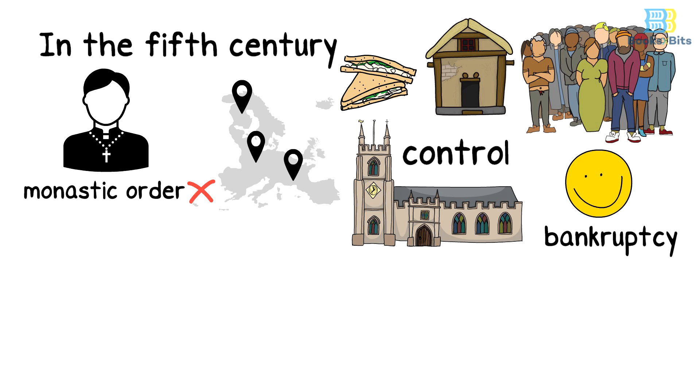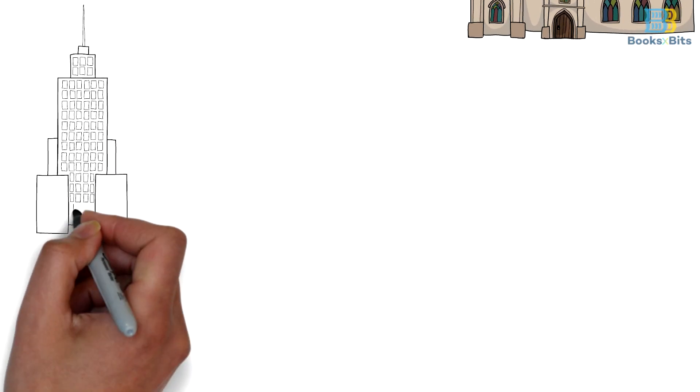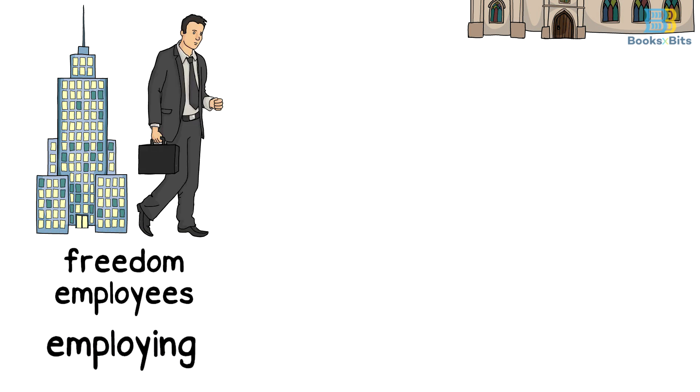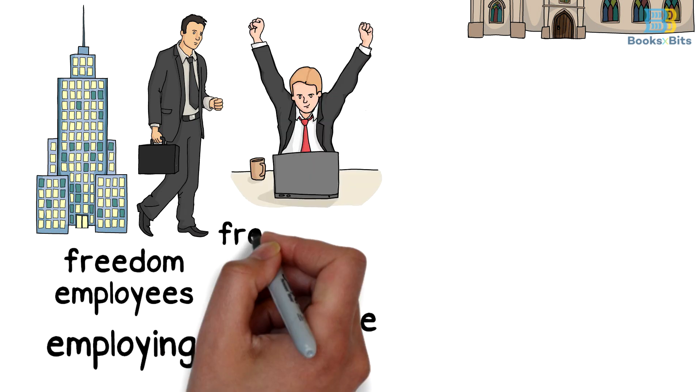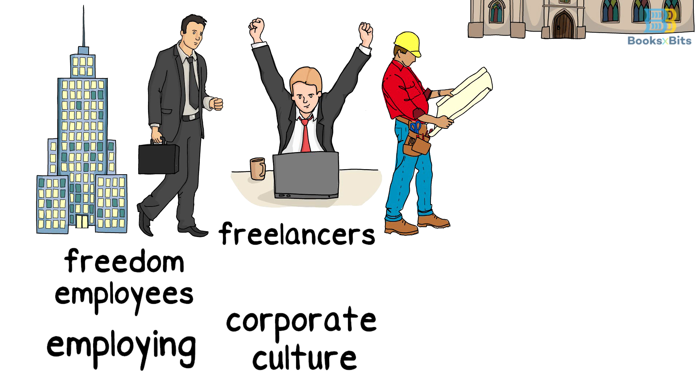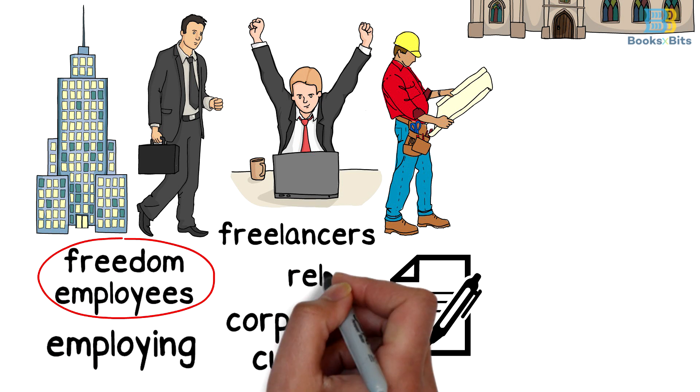By the same token, in our time, companies seek to curb the freedom of their employees by employing them and connecting them to the corporate culture. Instead of contracting with freelancers or contractors to do the work, companies employ employees on permanent contracts, which allow them to control the freedom of these employees and ensure that they can rely on them.